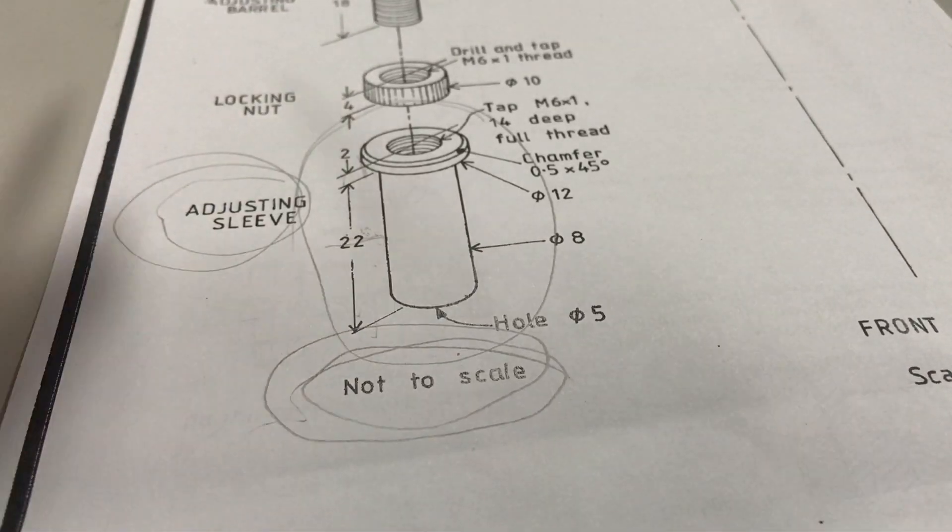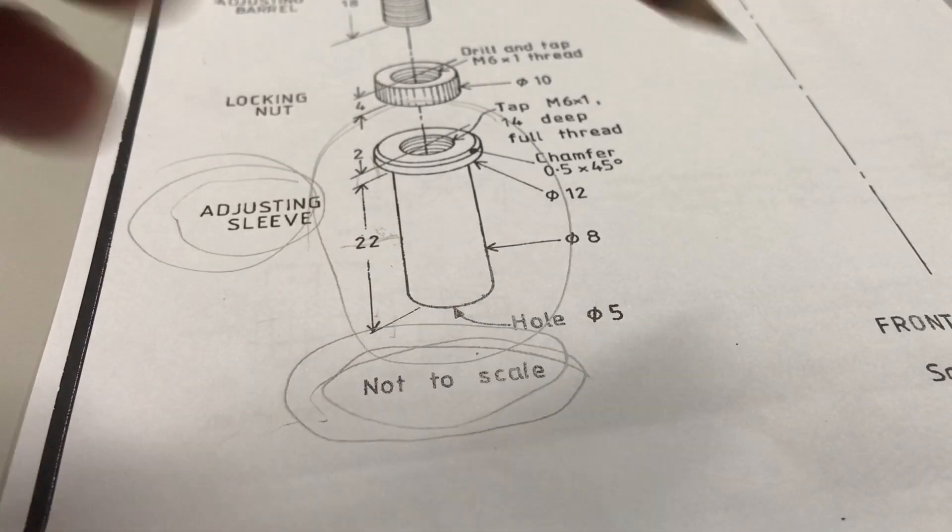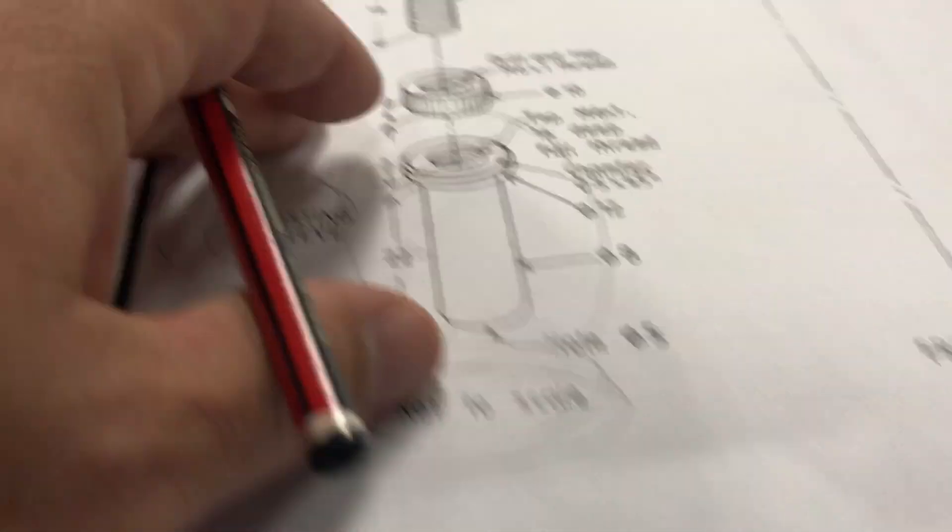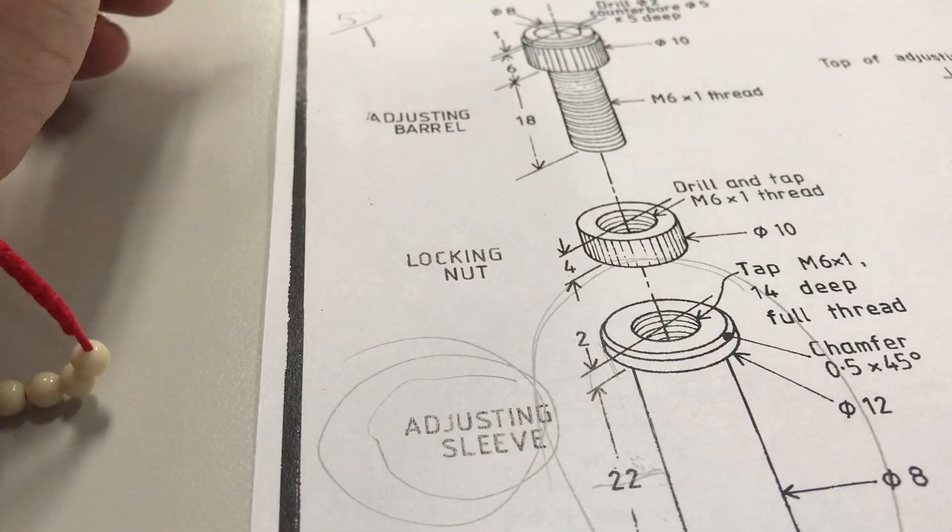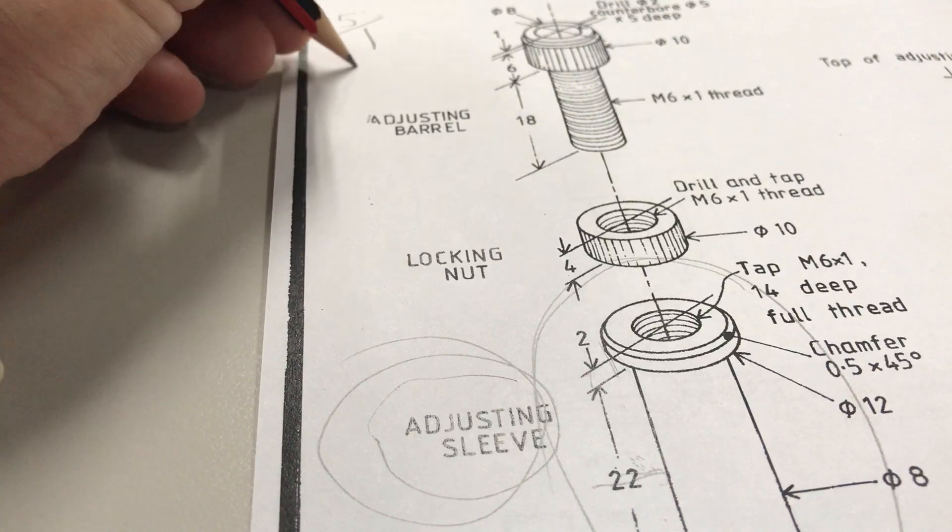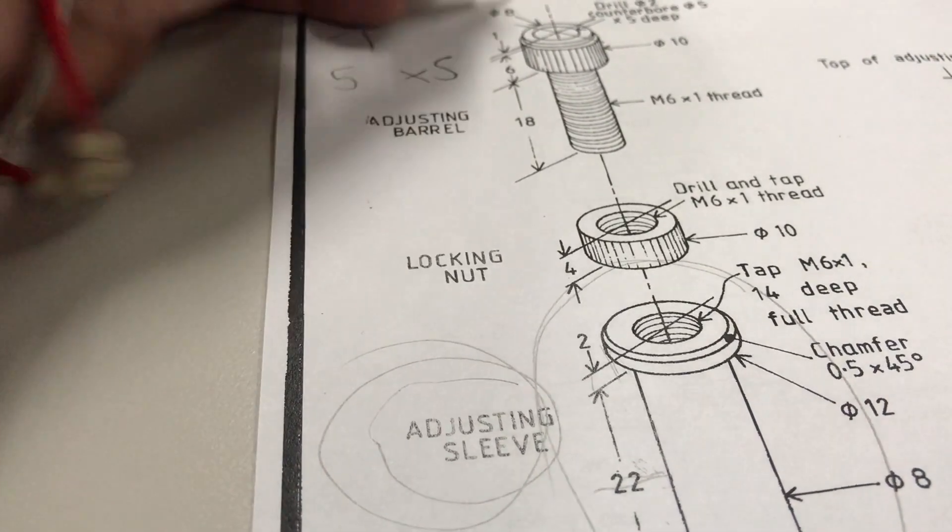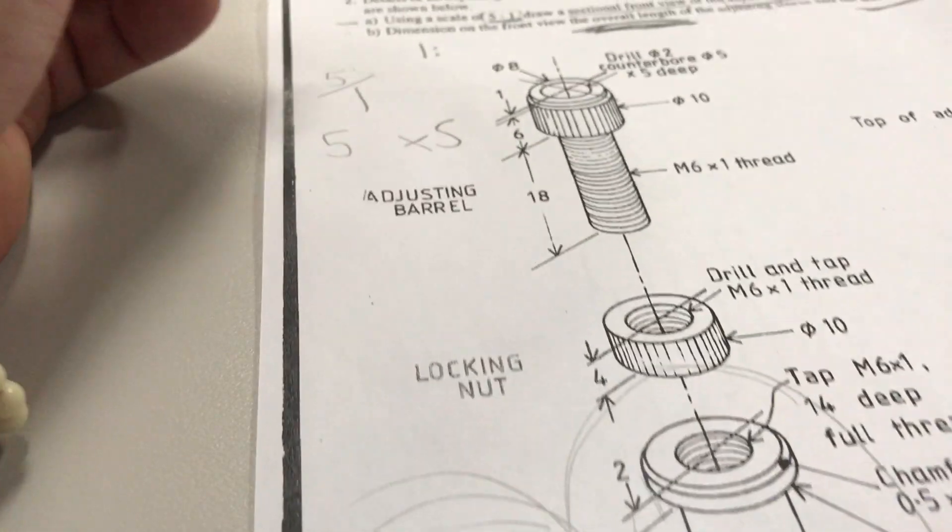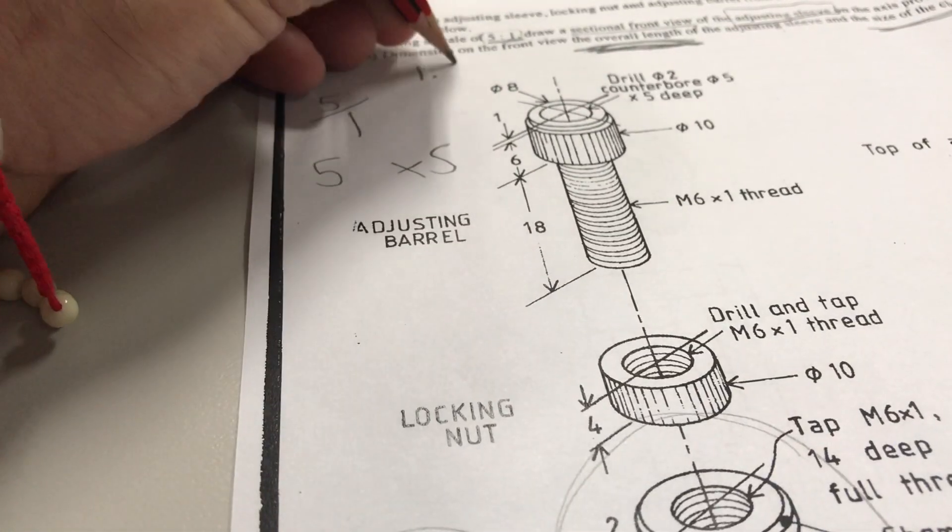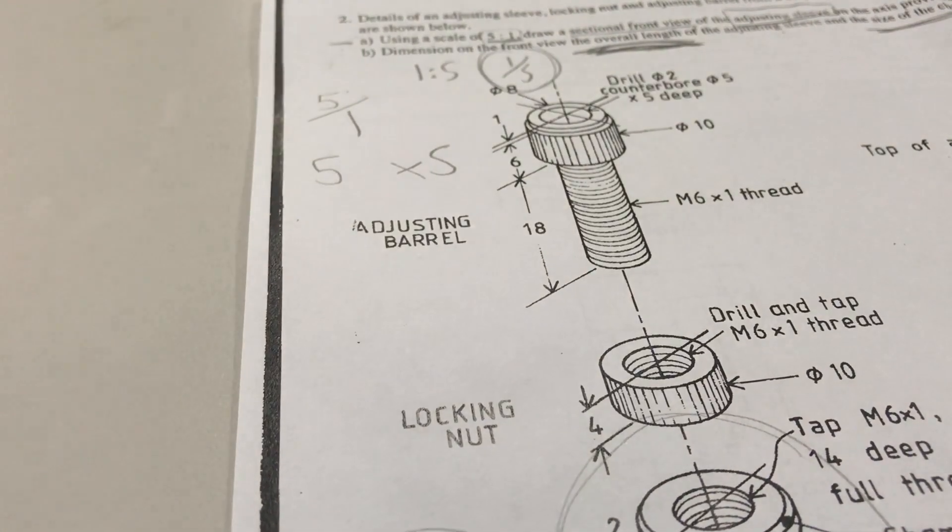So we know that 5 to 1 is going to be bigger. And the best way to think about that is put 5 over 1 as a fraction, and 5 over 1 is obviously 5, so it's times 5. If we had a scale of 1 is to 5, it would be 1 over 5, so it would be one-fifth the size. But we know it's times 5, so it's five times the size.